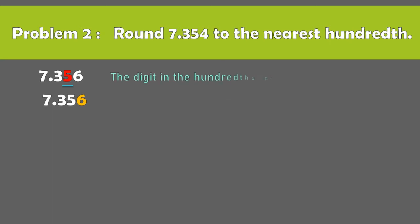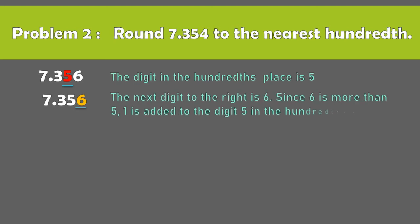Problem number 2, round 7.354 to the nearest hundredth. The digit in the hundredth place is 5. The next digit to the right is 6. Since 6 is more than 5, 1 is added to the digit 5 in the hundredth place.